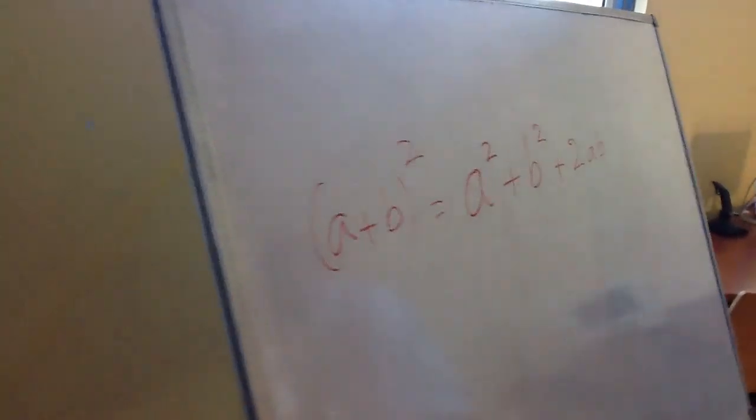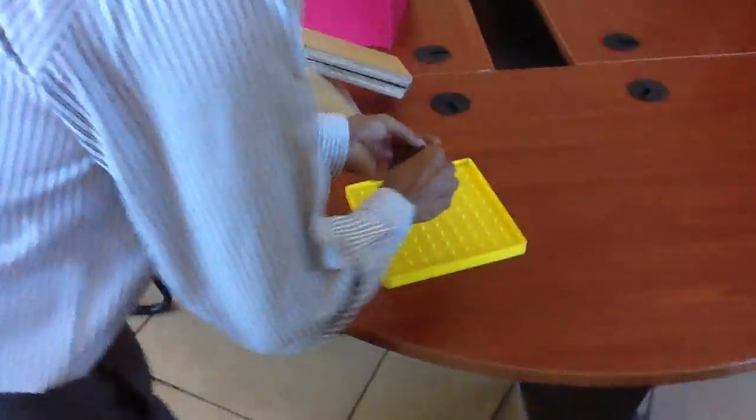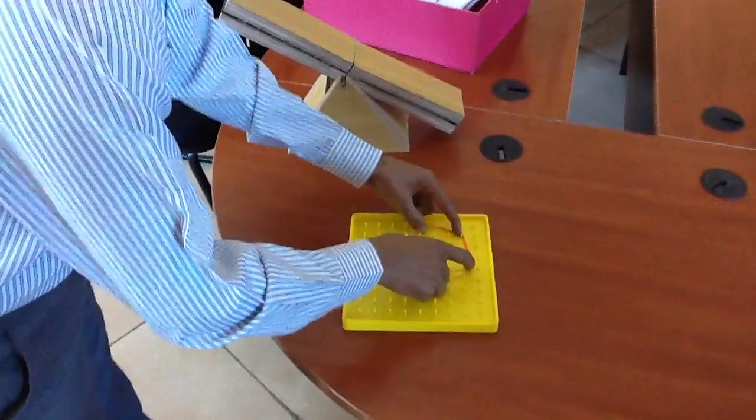In the math lab, children will be given this kind of a bowl. And what they will do is they will have lots of such rubber bands. And for instance, they will now put a rubber band and make this, let's say, a square.